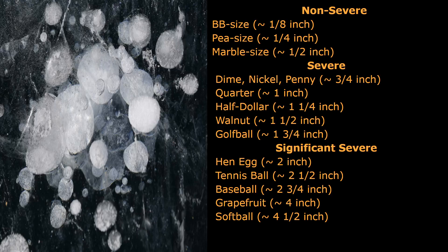Hail safety. First, let's consider hail sizes. Non-severe hail is BB size, which is about an eighth of an inch; pea size, which is a quarter of an inch; or marble size, which is half an inch. Severe hail is dime, nickel, or penny size, which is about three quarters of an inch; quarter size, which is an inch; half dollar, about one and a quarter inches; walnut, one and a half inches; or golf ball, one and three quarters inches. Significant severe hail is hen egg, which is about two inches; tennis ball size, two and a half inches; baseball, two and three quarter inches; grapefruit, four inches; or softball, four and a half inches of hail size.